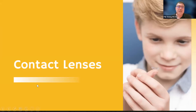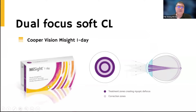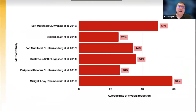For contact lenses, we have CooperVision MiSight one-day, which has a dual focus and works on the same myopic defocus concept. It's available in Malaysia; however, the cost is quite prohibitive, making it less popular for cost reasons. Studies on the effectiveness of soft multifocal lenses and dual focus including MiSight show a range of efficacy from 25% to 59%.